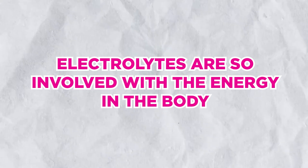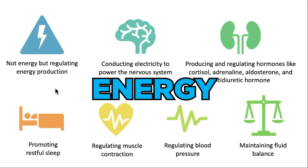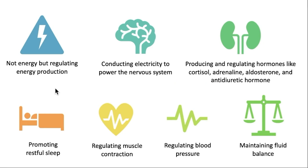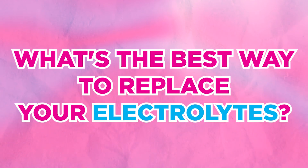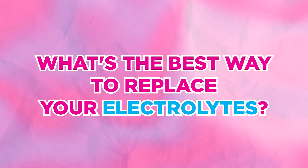Electrolytes are deeply involved with the generation of energy in the body — they regulate it. They're not energy themselves, but they regulate all energy production. They conduct the electricity of the nervous system and produce and regulate hormones like your stress hormone adrenaline, aldosterone, and anti-diuretic hormones. They promote restful sleep, regulate muscle contractions, regulate blood pressure, and maintain fluid balance.